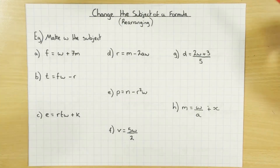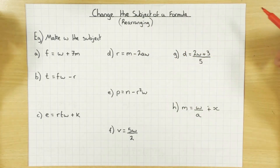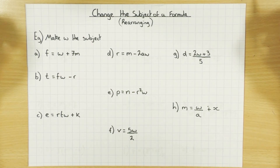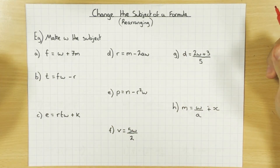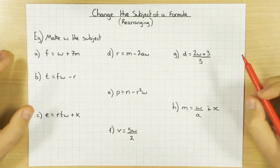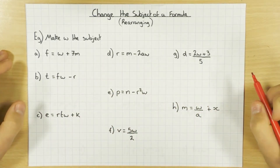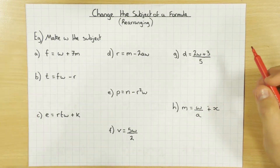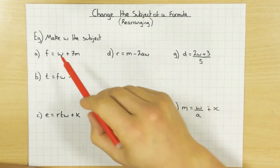Hi guys. In this video we're going to have a look at how we change the subject of a formula, also known as rearranging equations. In all my examples I want to make W the subject, which means I need to end up with W equals something. I'm going to use the balance method to solve and rearrange these equations. If you're used to using the flowchart, check out my other rearranging video. If you use the balance method, which tends to be with the higher students, this is the video for you.